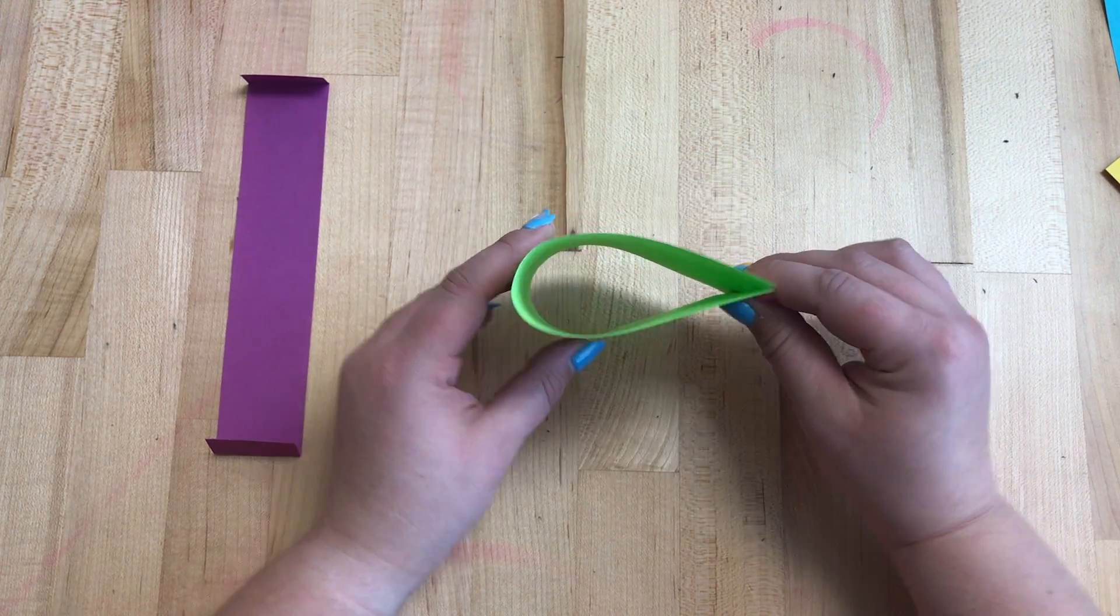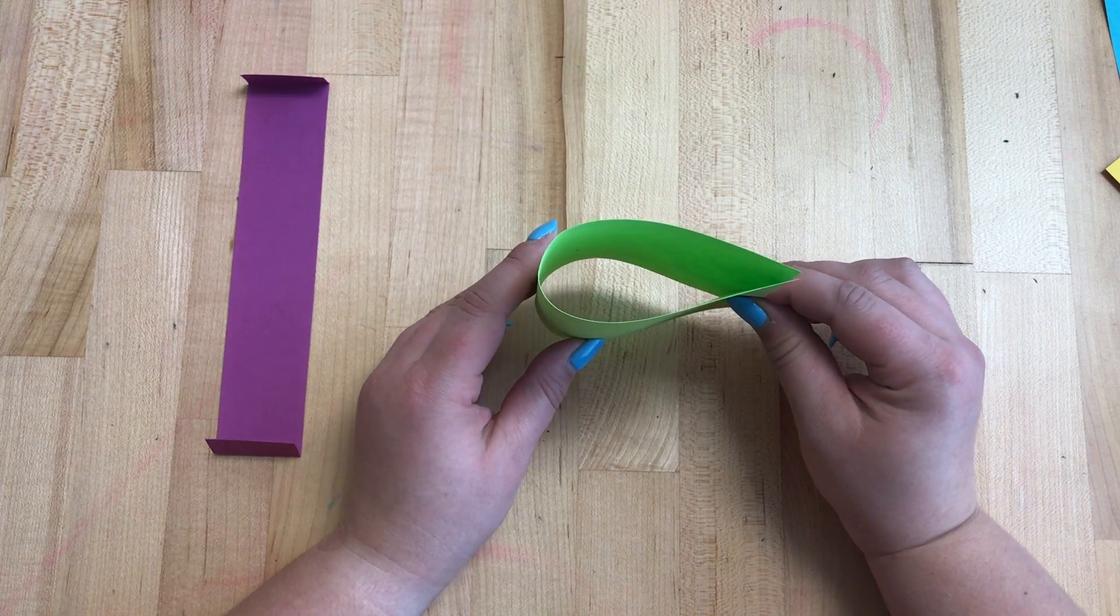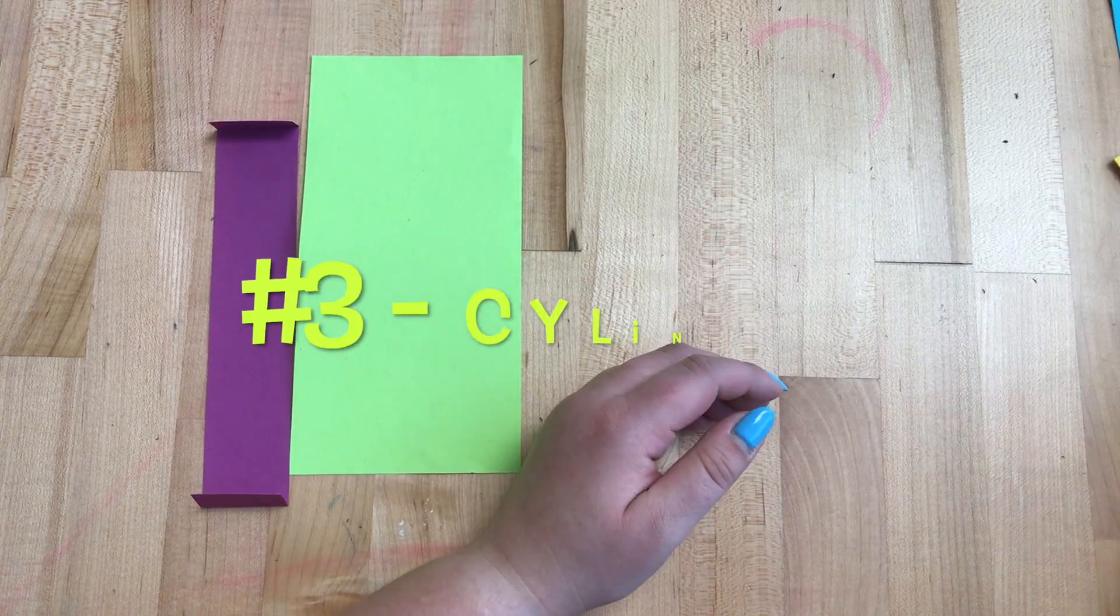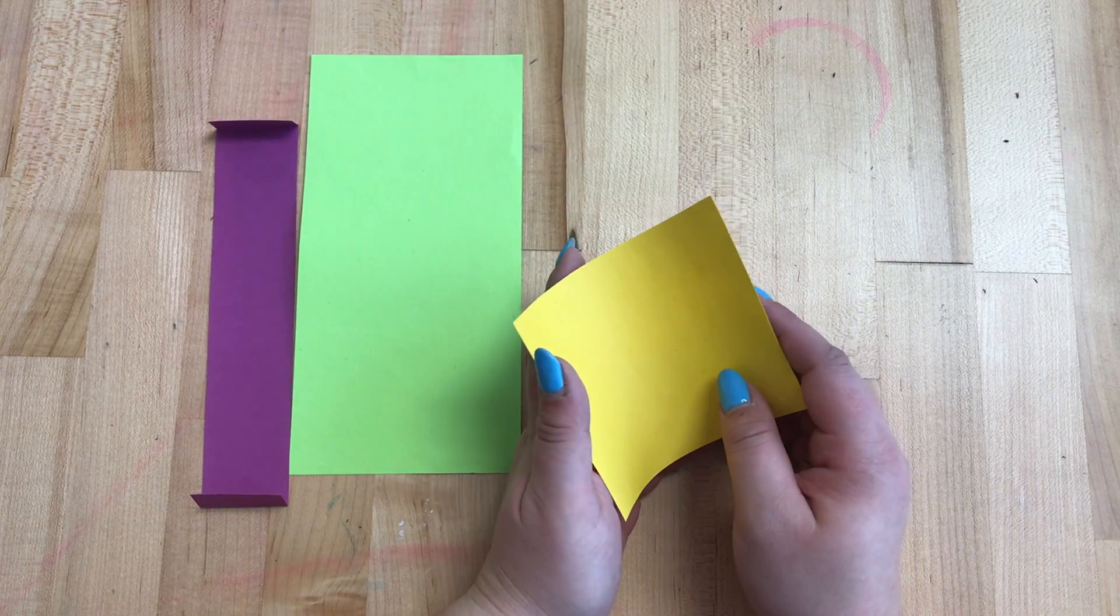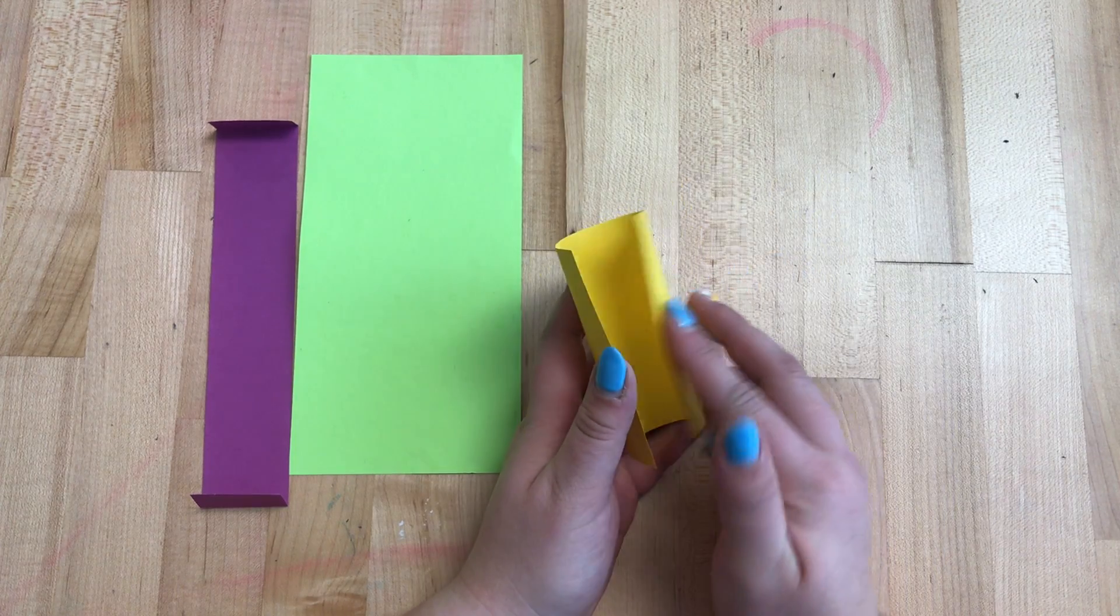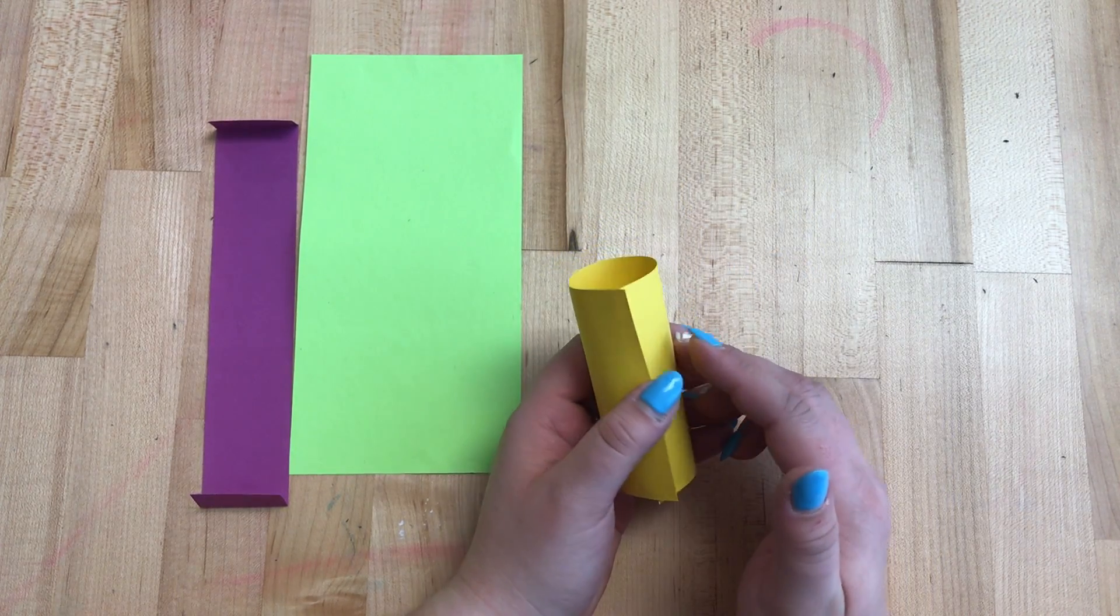Why don't you go ahead and try that. The next shape we are going to make is a cylinder. A cylinder is like the shape of a soda can, of a bottle.